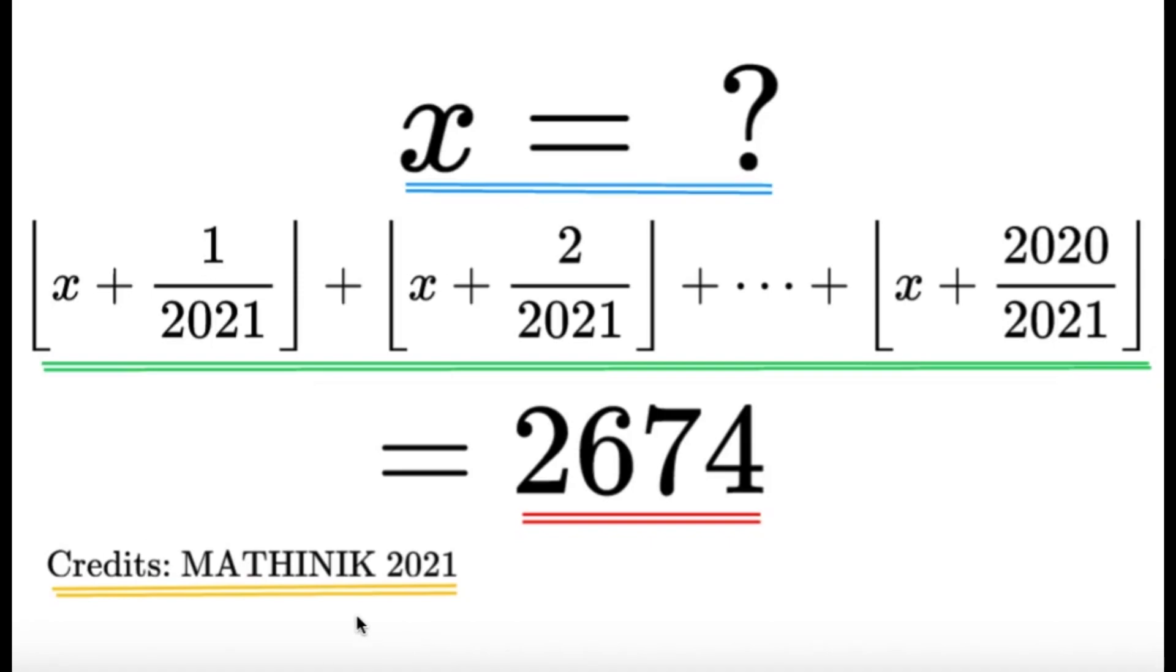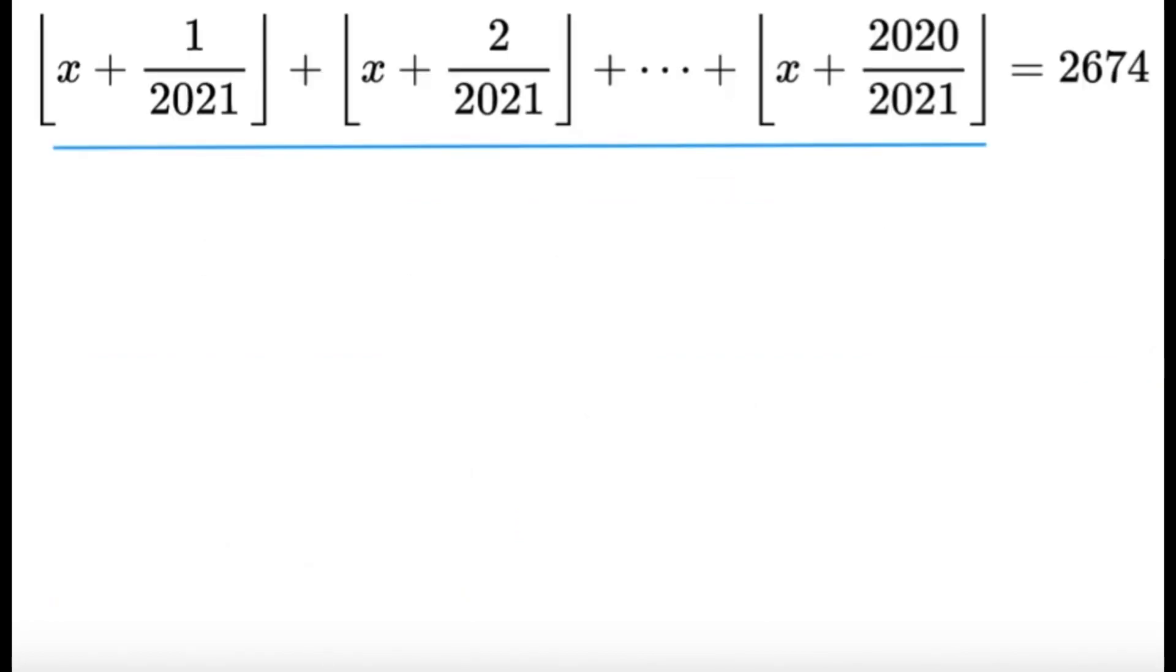Now, here we have 2020 floor functions. And it's not really easy to solve for x or try to remove the floor functions one by one. So what we're going to do here first is to make an observation. Obviously there's a pattern: x plus 1 over 2021, x plus 2 over 2021, and so on. But what's important here is to realize that we should look at the smallest value and the largest value inside the floor functions. If we take the difference of those two numbers, it's going to be 2019 divided by 2021. And what's important about this is that it's less than one.